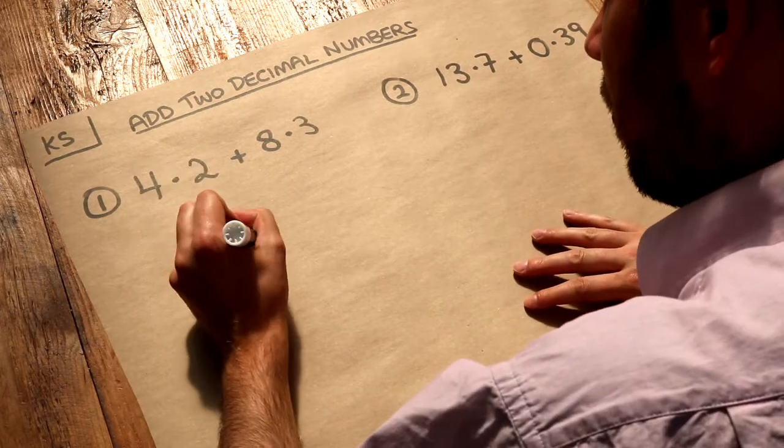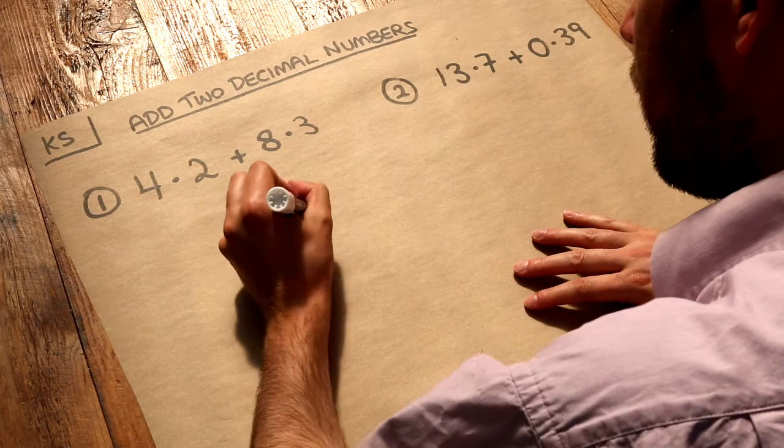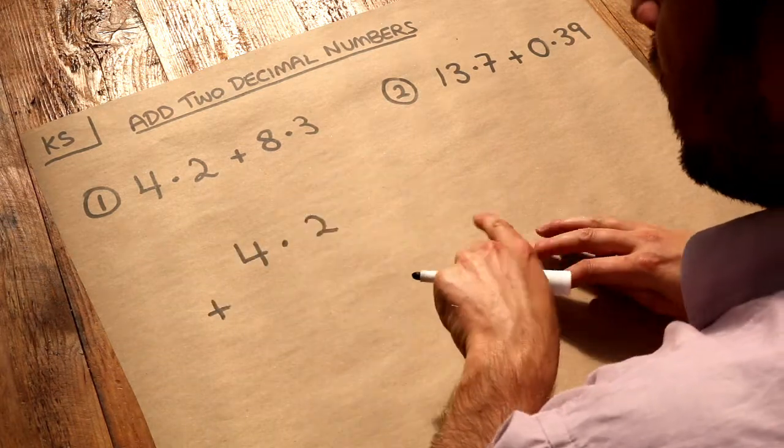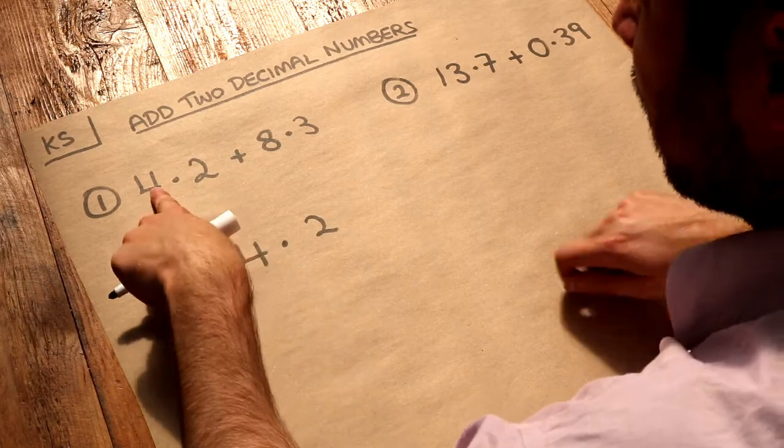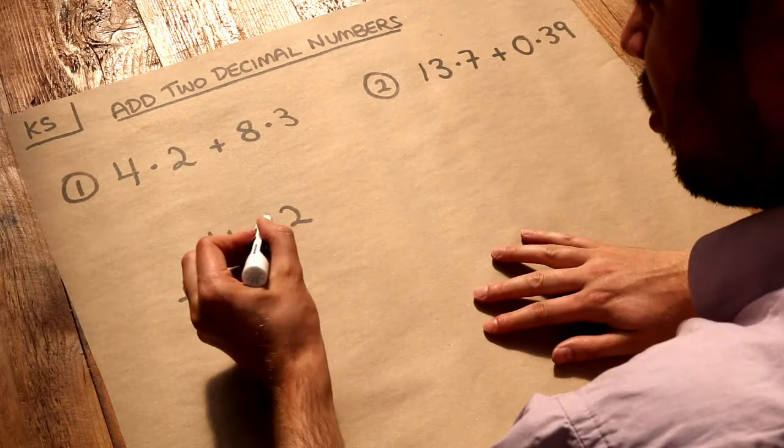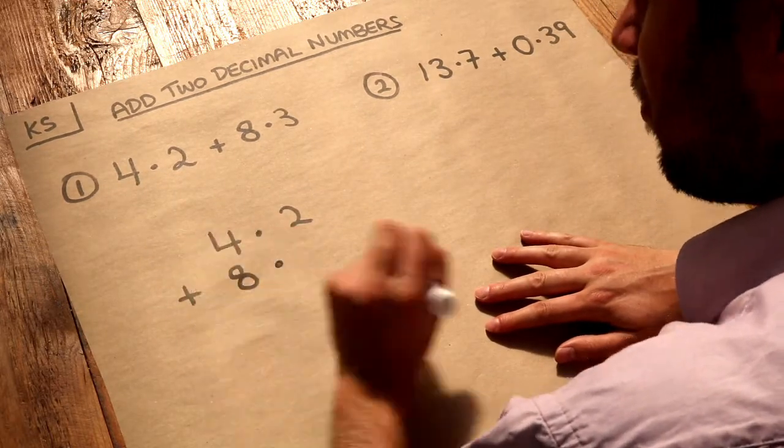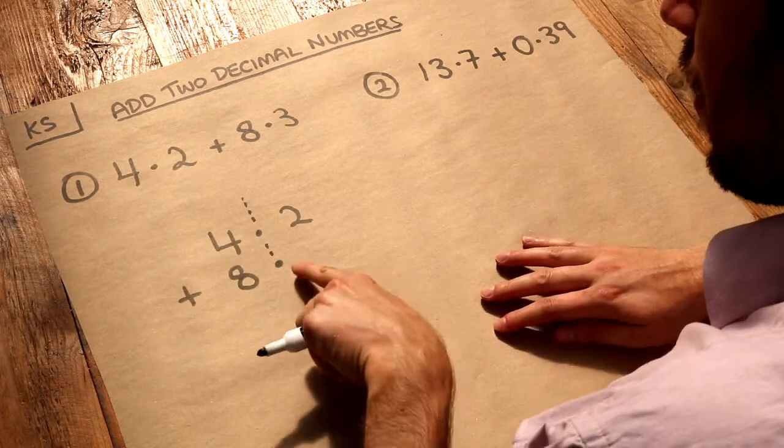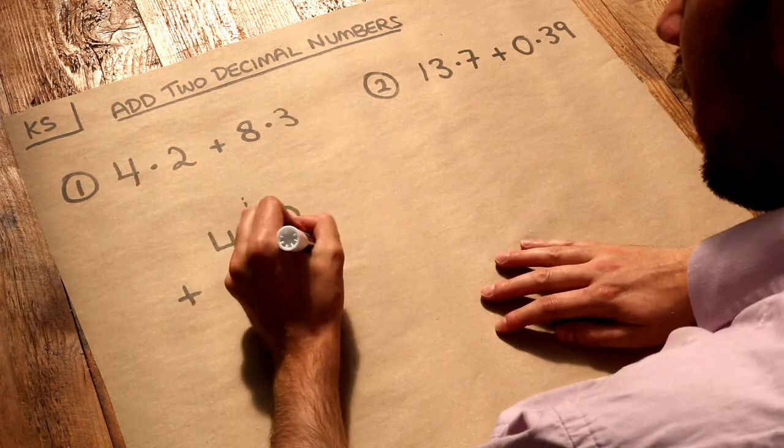I'm going to arrange my numbers in column fashion: 4.2 plus 8.3. We need to make sure 4 is the units digit and 8 is the units digit—they have to appear in the same column. The easy way to achieve that is to make sure you put the decimal place vertically aligned, and then we've got 8.3 so we put the 3 here.